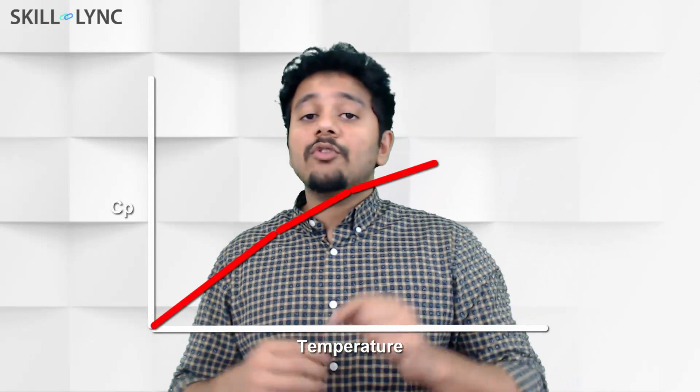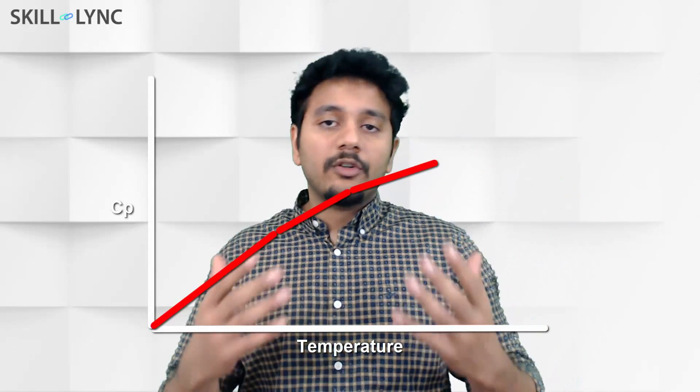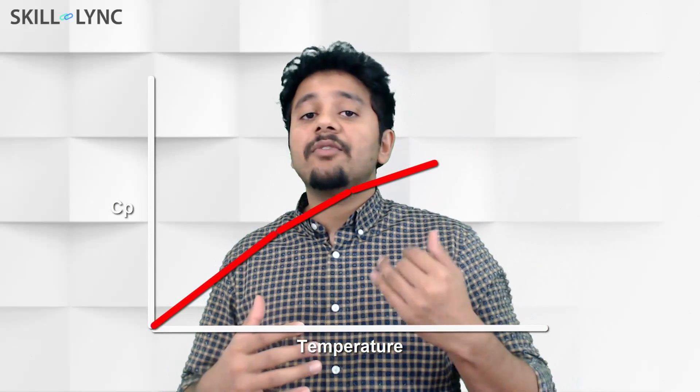This right here is how the specific heat of oxygen changes as a function of temperature. How do I fit a polynomial to this data so that if I input a temperature, I get the value for specific heat?